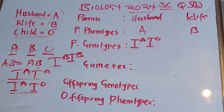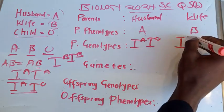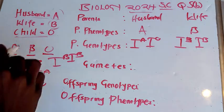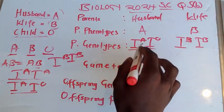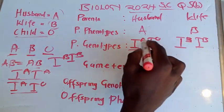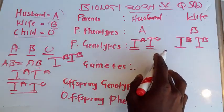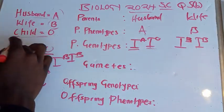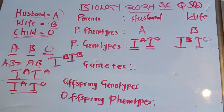Even if only one parent is heterozygous and the other is homozygous, it is still not possible to produce a child with blood group O. The reason is simple: the O allele is recessive, so if it is found alongside the dominant A or B allele, it will not show up — it will be suppressed. Both parents must be heterozygous for a child with blood group O to be possible.